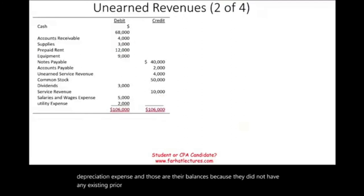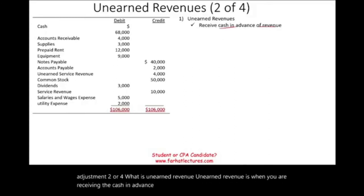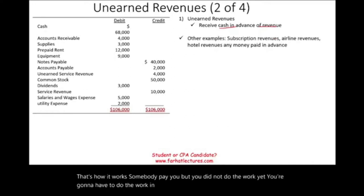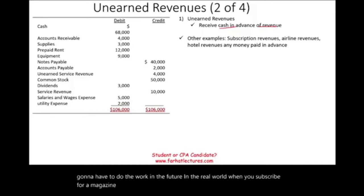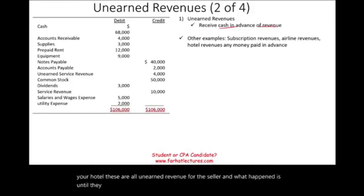The next adjustment is unearned revenue — adjustment two of four. Unearned revenue is when you receive cash in advance of performing the service. Somebody pays you, but you have not done the work yet. In the real world, examples include magazine subscriptions, airline tickets, and hotel payments — these are all unearned revenue for the seller. Until they perform the service, they cannot book it as revenue.